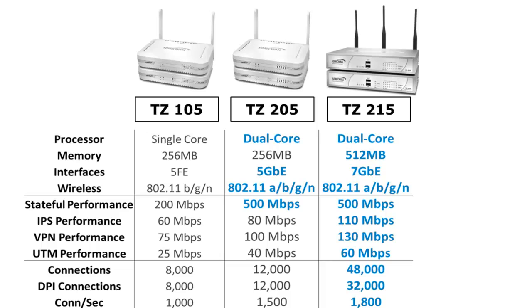On the wireless side, comparing the 105 to the 205, the 205 also supports the A-band, whereas the 105 only supports B, G, and N.